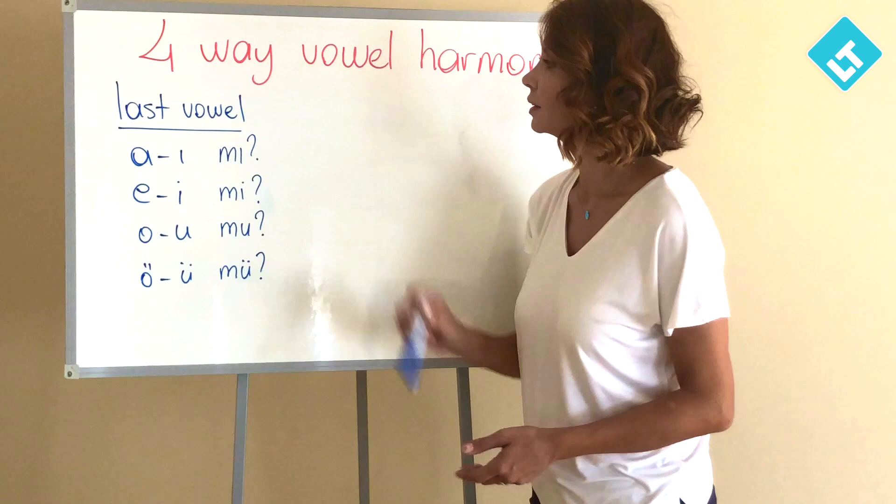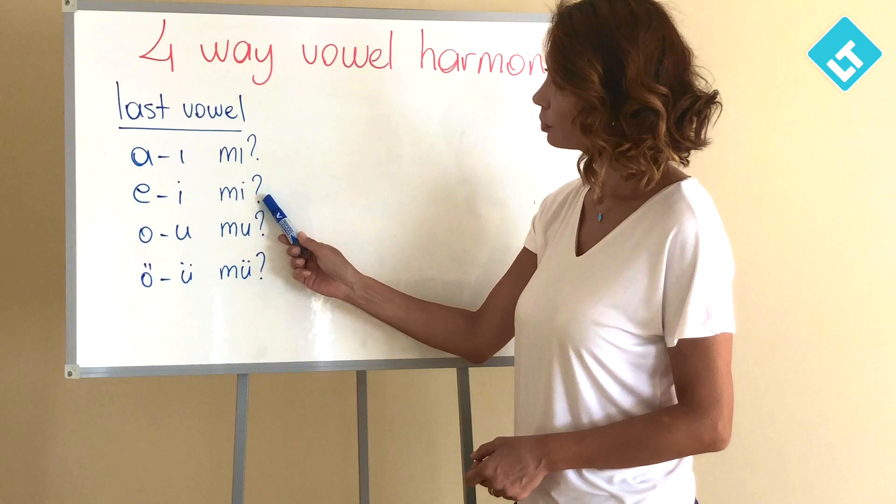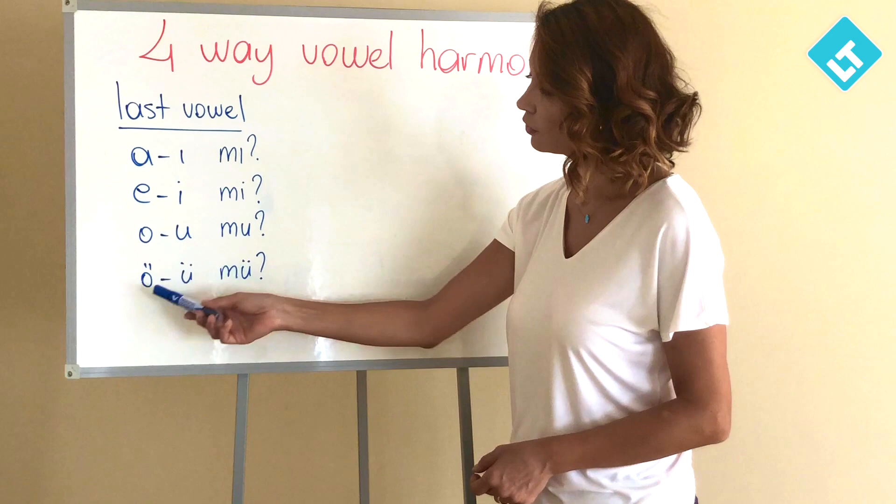Here is the rule: if the last vowel in the word is a or ı, we use mı. If it is e or i, we use mi. If it is o or u, we use mu. If it is ö or ü, we use mü.